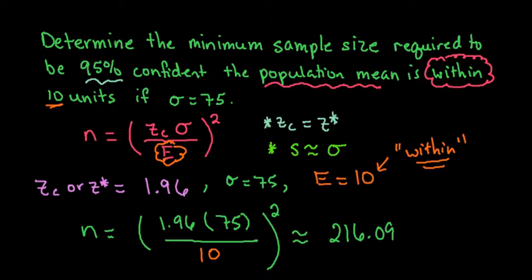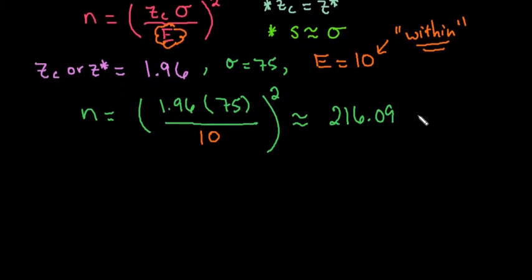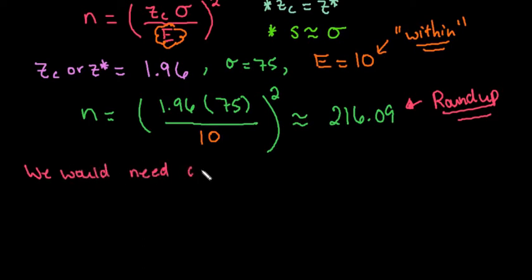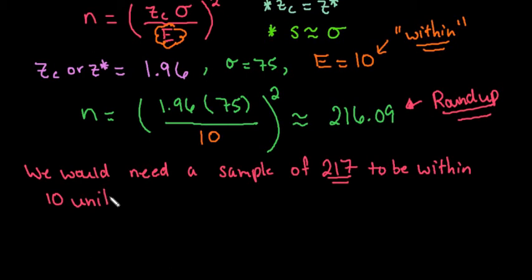Since we cannot sample 0.09 of a person, you always round up. We round up to the next integer, so we need a sample of 217.